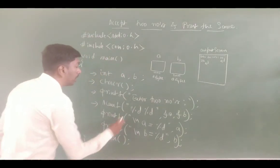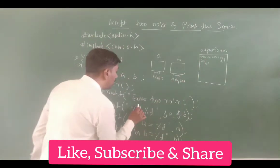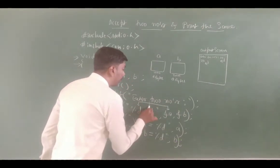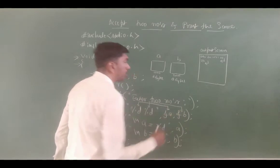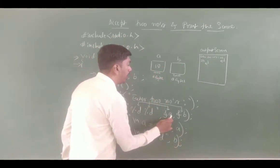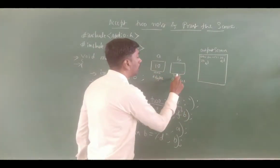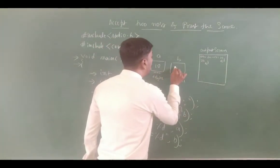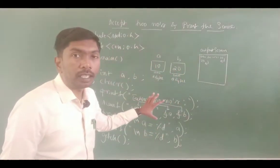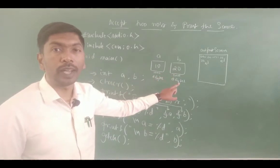When scanf reads: the first number 10 is stored in a — address of a is 1000, so 10 is stored at 1000. The second number 20 is stored in b — address of b is 2000, so 20 is stored at 2000. So a holds the value 10 and b holds the value 20.